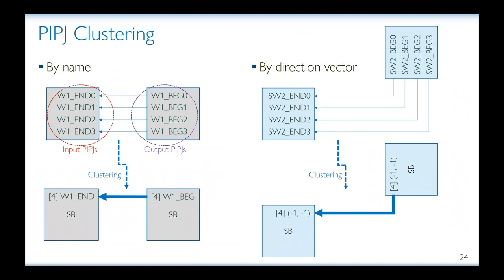Before seeing the results, let us understand how Netcracker clusters PIP junctions. First, it can apply what we call name clustering. An example is shown on the left: we have output PIP junctions that drive a length-one wire going west, and they are grouped together. The resulting cluster inherits the name W1 and is assigned size 4. The same principle is applied on input PIP junctions. But to account for non-cardinal wires and those that have a secondary destination, clustering by direction vector is more suitable. An example is shown on the right: PIP junctions that are the ends of a length-two wire heading southwest are grouped into clusters of size 4, whose name uniquely defines the offset of the destination PIP junction with respect to the source.